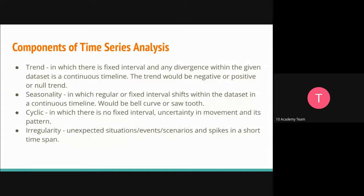The third component is cyclic — there are no fixed intervals, just certain movements with different patterns. In seasonality it's a regular or fixed interval shift, but in cyclic there is no fixed or certain interval or movement in our patterns. The fourth is irregularity — it's an unexpected situation where our data is showing spikes or variations. It's not fixed or regular; it's just an unexpected situation that can spike our analysis.